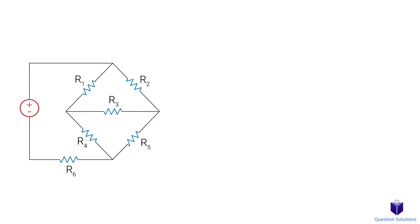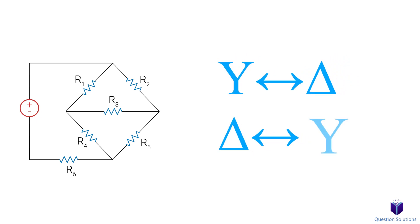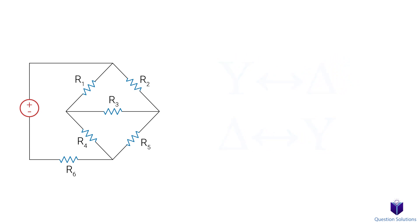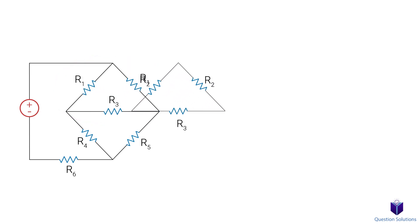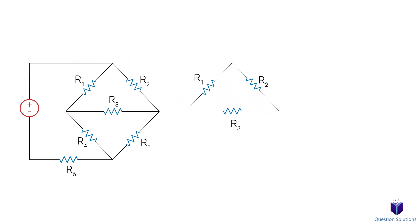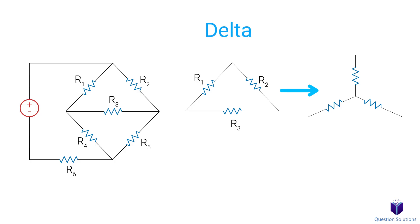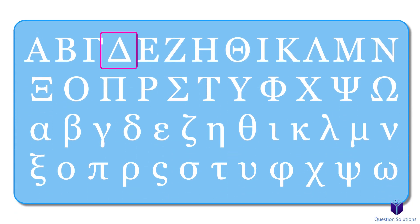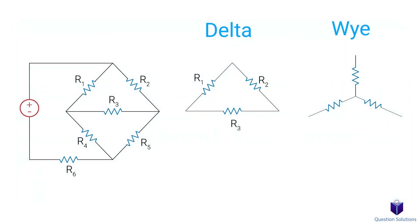To do this, we need to use something called a Y-to-delta or delta-to-Y transformation. Let's focus on this part of the circuit. What we want to do is convert this into this. The reason this is called the delta is because the Greek letter delta looks like this. This is called the Y because it sort of looks like a Y shape.